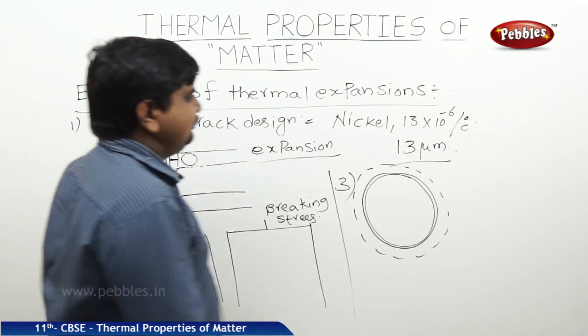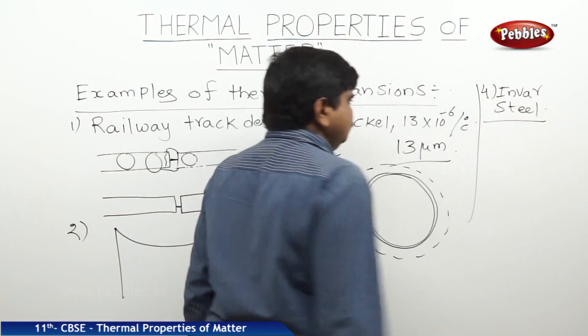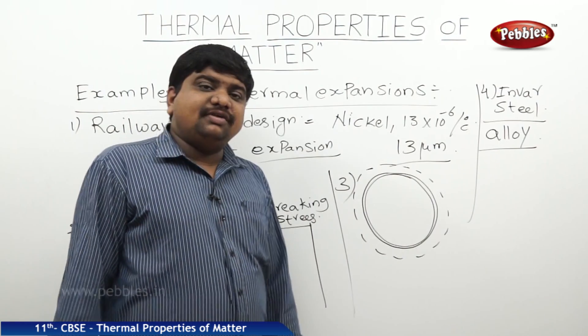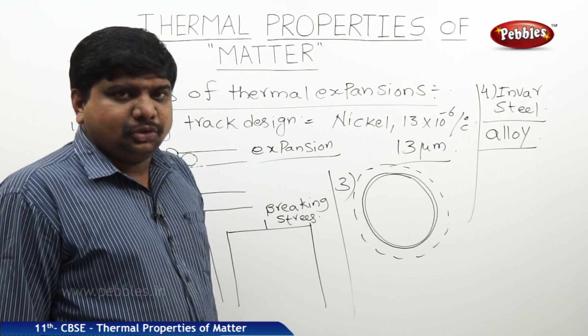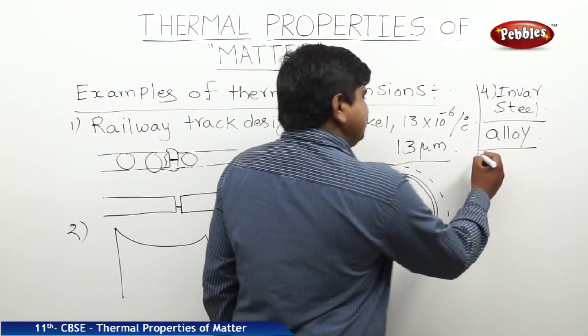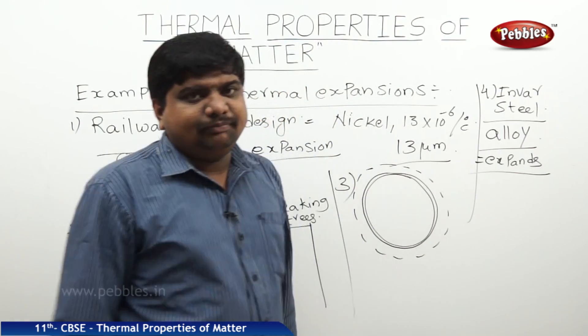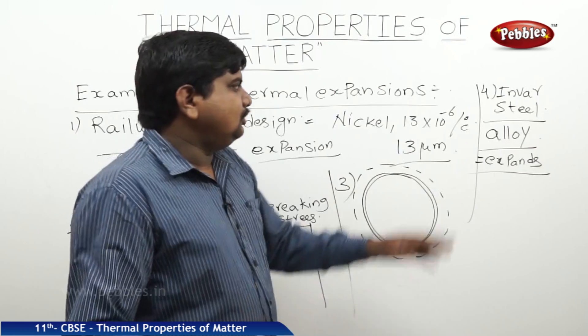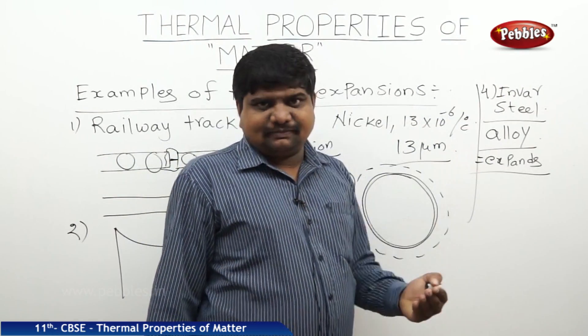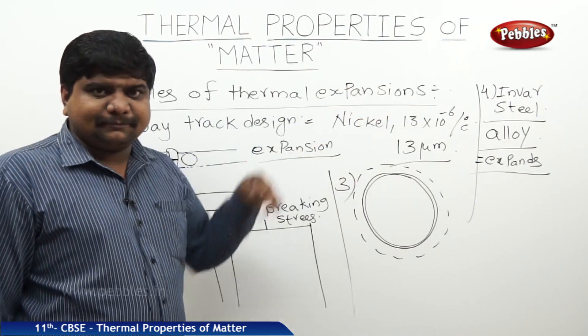Next example is invar steel. This invar steel is an alloy of steel and nickel. Its expansion coefficient is very less. That's why this invar steel is used to make the beams, railway tracks and the flyover bridges. Because, if once it expands enormously, automatically there will be a breaking stress applied on the bridges or on the railway tracks where the invar steel was used. Its coefficient of linear expansion is very less, so it won't have that much difficulty or difference while the temperature increases. These small concepts, what we are discussing in our daily life are the best examples for the thermal expansions.